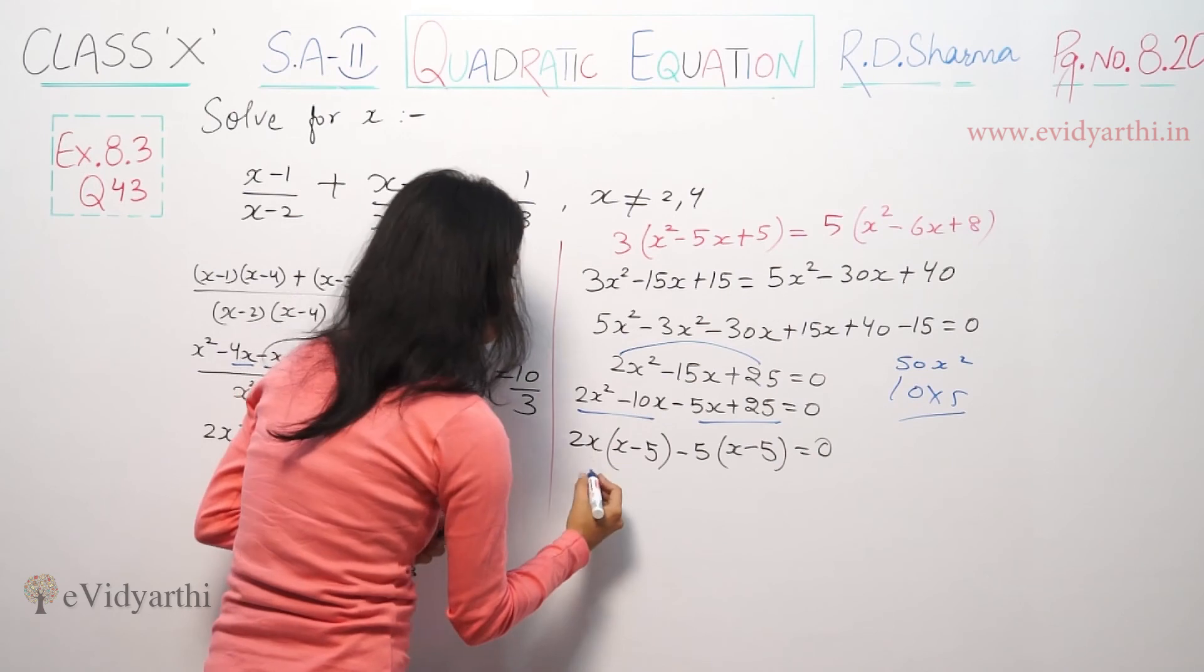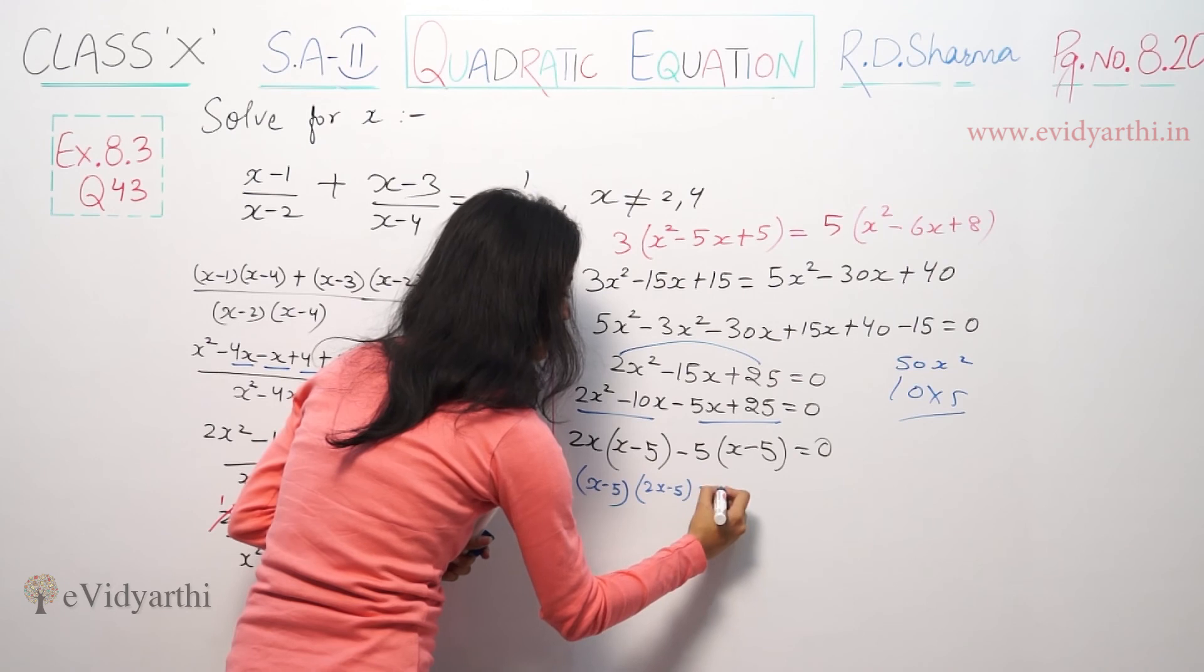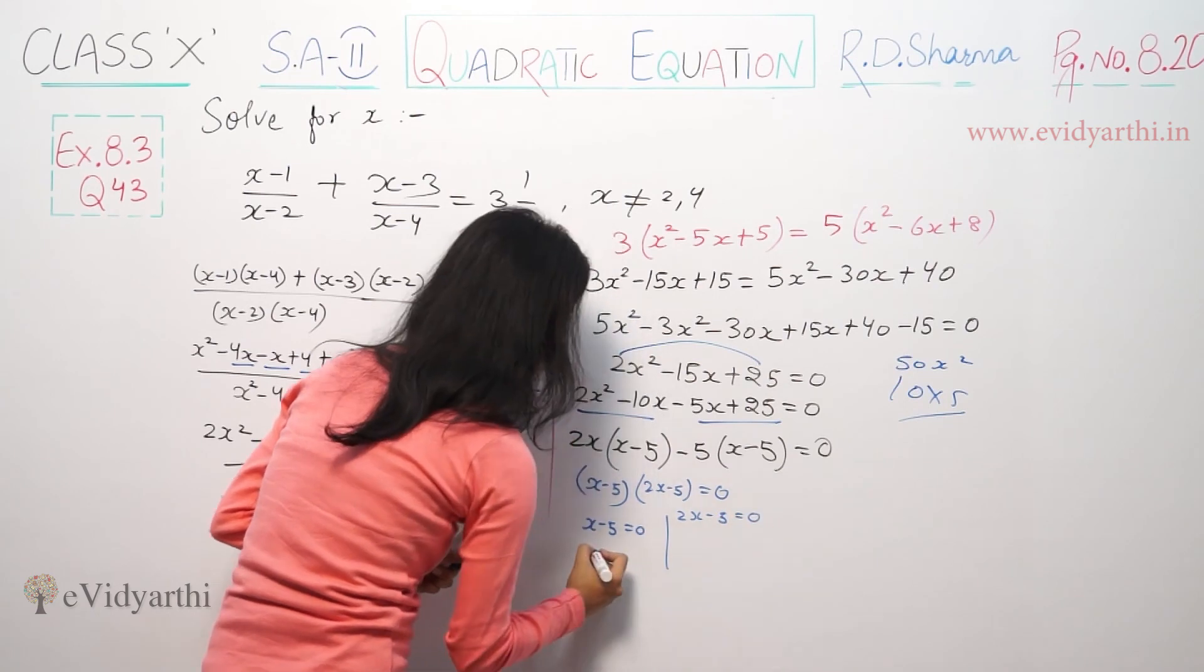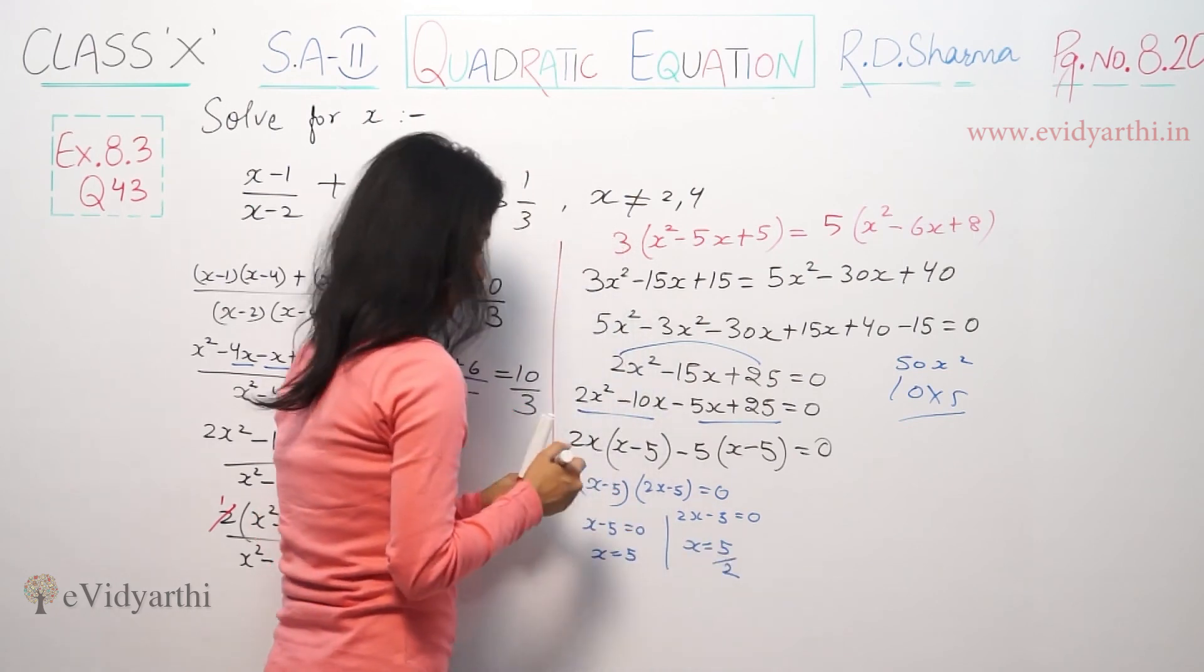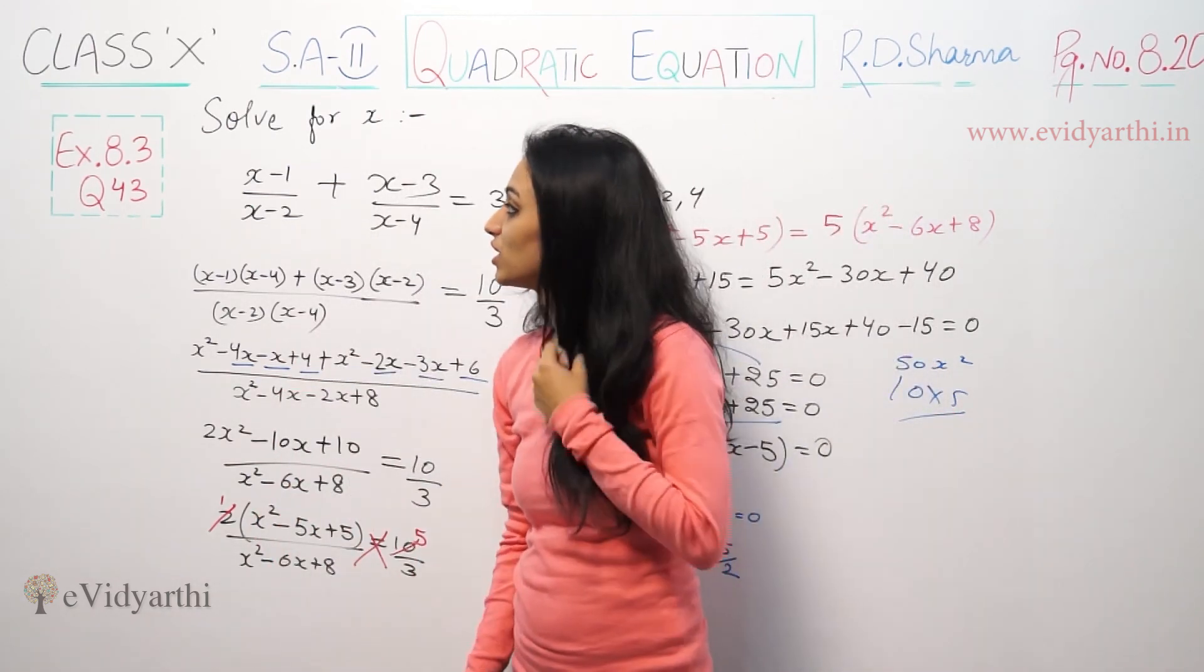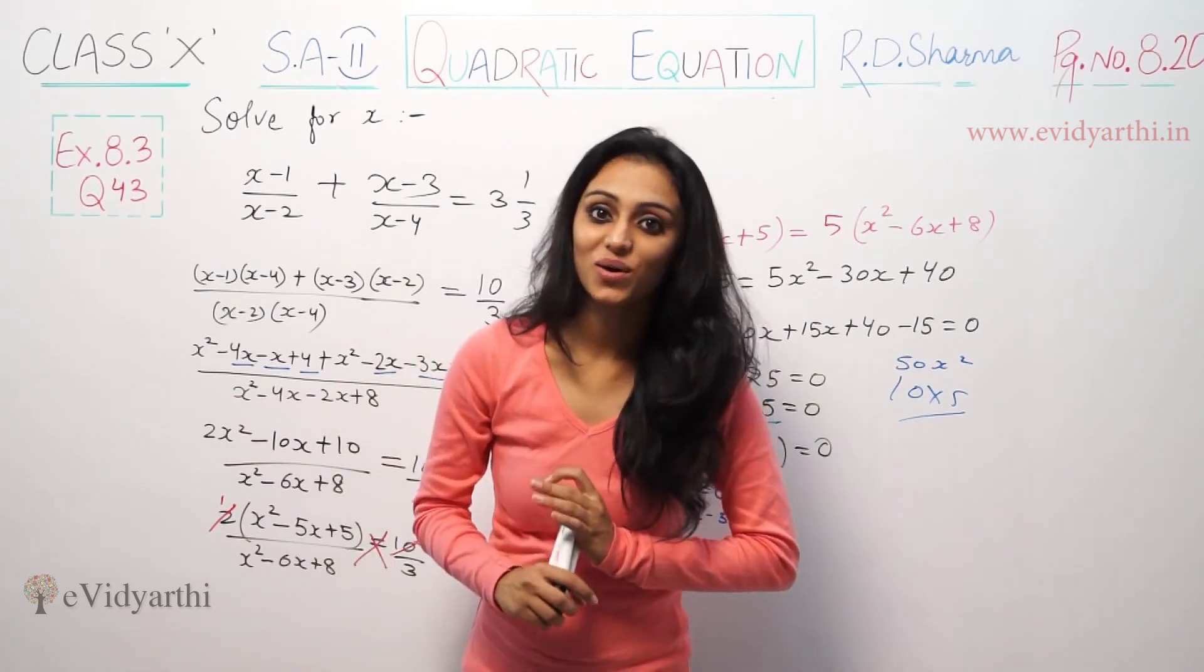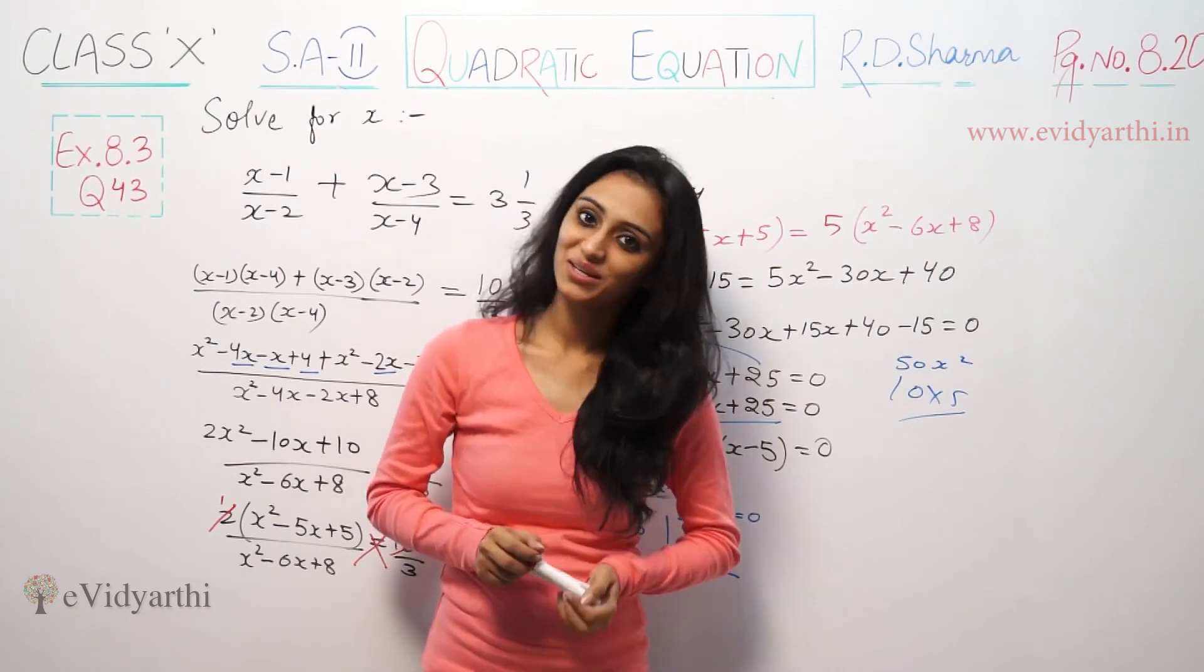So here (2x - 5)(x - 5) = 0. So x - 5 = 0 and 2x - 5 = 0, giving x = 5 and x = 5/2. This is question number 43, exercise 8.3, page number 8.20 of RD Sharma. If you have any doubt, please do write to us. Just click on each other, give us a like and watch the next video for some more questions. Goodbye.